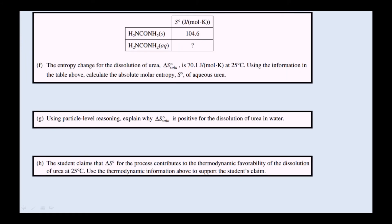Part F: The entropy change for the dissolution of urea, delta S solution, is 70.1 joules per mole Kelvin at 25 degrees Celsius. Using the information in the table above, calculate the absolute molar entropy of aqueous urea. Just one thing to note: the superscript circle indicates the standard state. If we look at the equations page, we can see the formula: delta S equals the sum of S for products minus the sum of S for reactants.